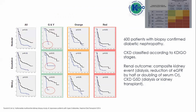One of the most significant issues in diabetic nephropathy is the different progression in kidney function decline between patients. The differences between rapid decliners and those with slower progression are not fully understood. In this article, the authors analyzed 600 patients with biopsy-proven diabetic nephropathy. They classified them according to KDIGO stages shown in green, yellow, orange, and red colors. The composite renal outcome is dialysis, reduction of GFR by half, or doubling of serum creatinine. The authors observed that the presence of glomerular structural lesions, such as nodular or exudative ones or mesangiolysis, were related to achieving the renal outcome — especially evident in the green-yellow categories.